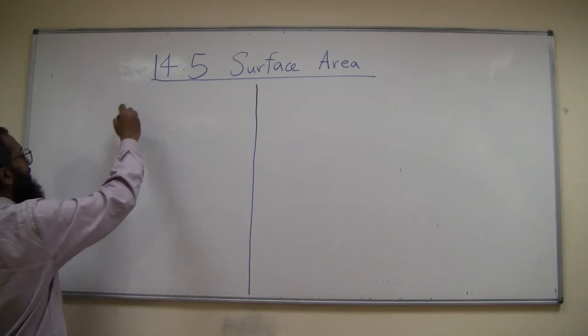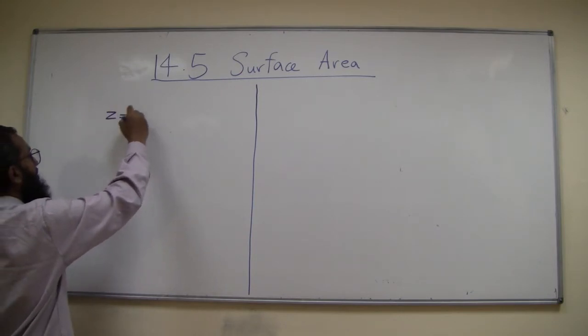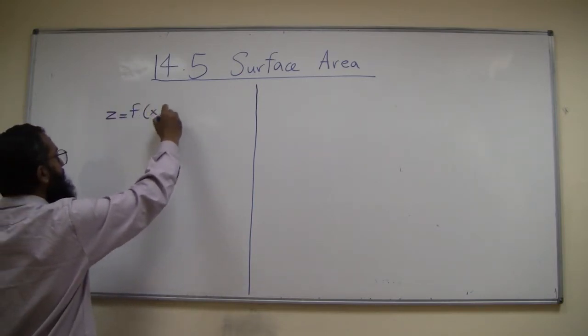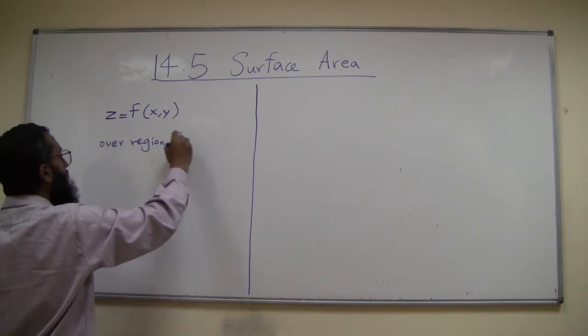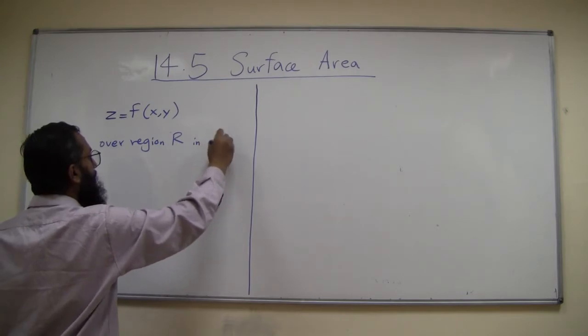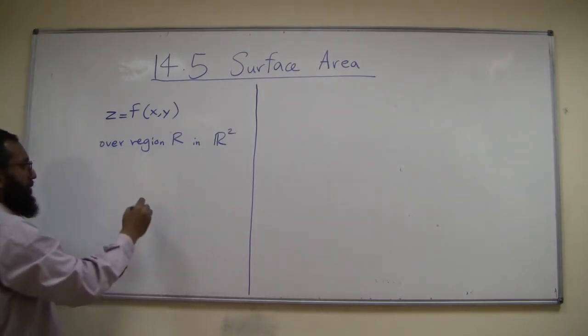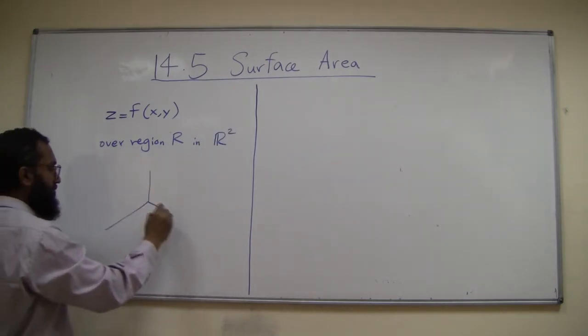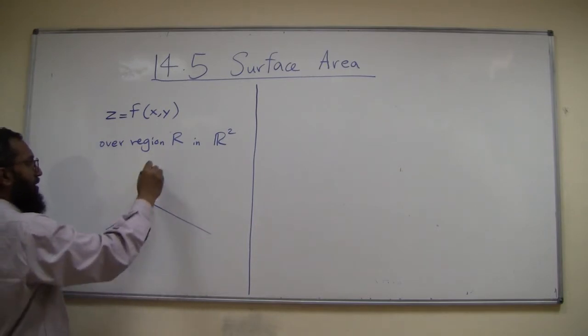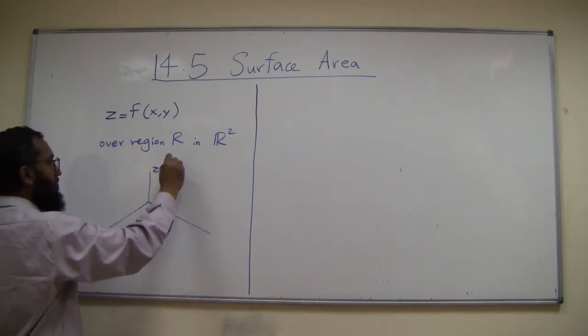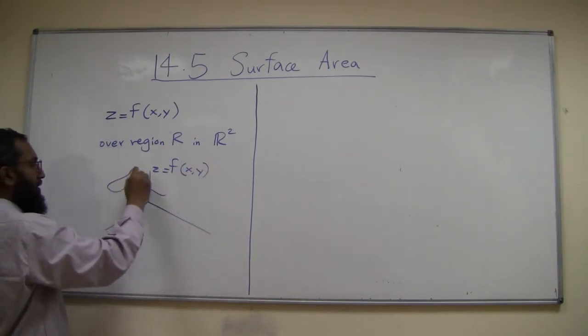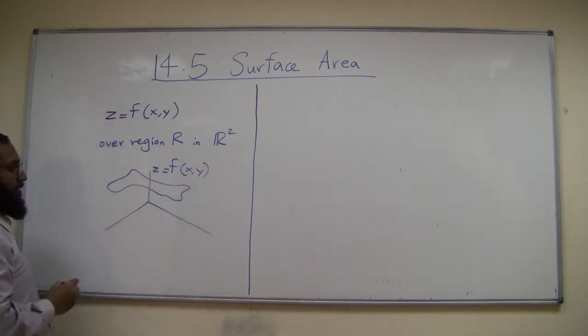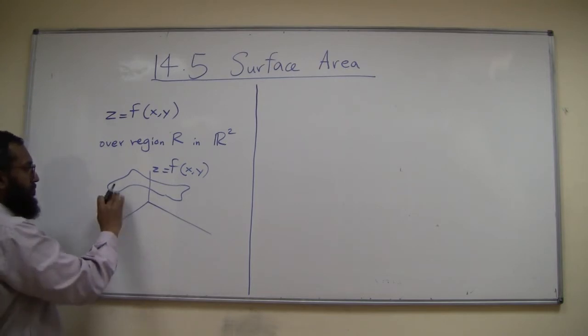So let's say you have a function z equal to f(x,y) over region R in R². Basically you have something like this - the function z makes a surface, something like this.